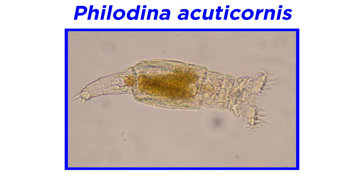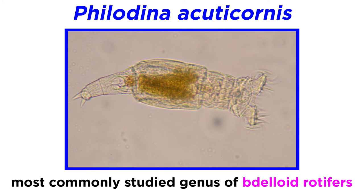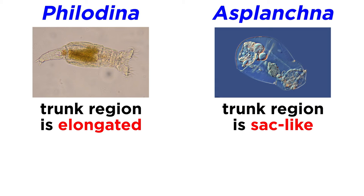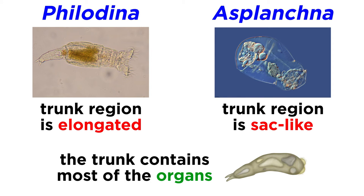For this anatomical example, we will examine members of the genus Philodina, since they are perhaps the best known and most commonly studied genus of bdelloid rotifers. Though the trunk region is elongated in this genus, it is sac-like in others, such as those of the genus Asplanchna. The trunk contains most of the animal's organs, and is occasionally superficially ringed, which gives the appearance of segmentation.